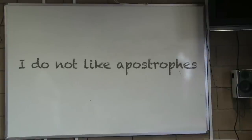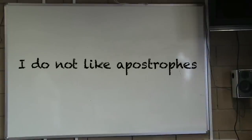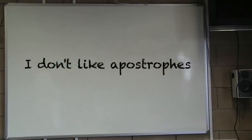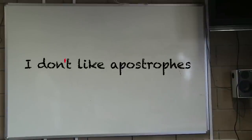Let's have a look at an example. Most people wouldn't say 'do not' — they've shortened it to 'don't.' Here, the apostrophe, which looks like a flying comma, has replaced or turned away the letter O. The apostrophe stands in for the missing letter.